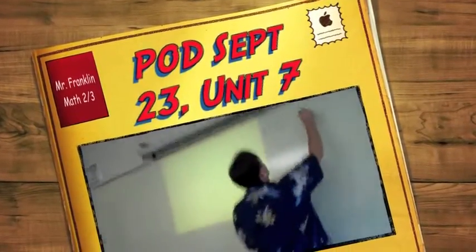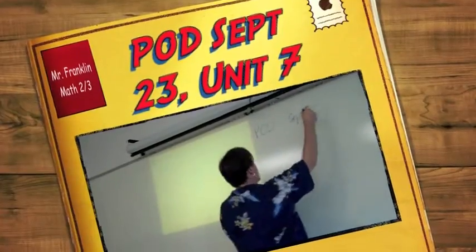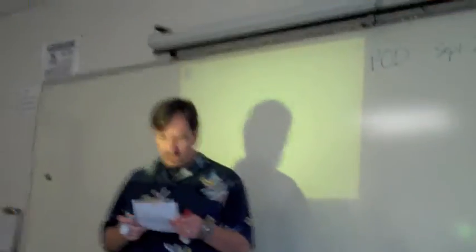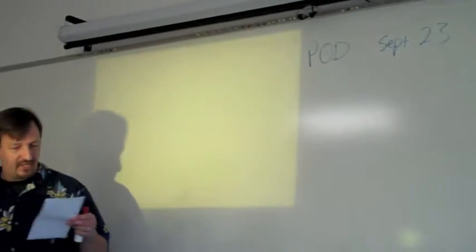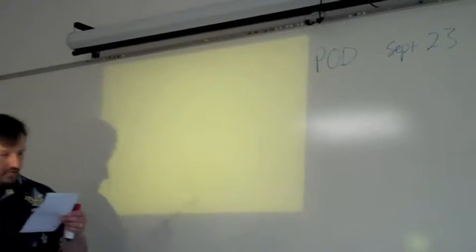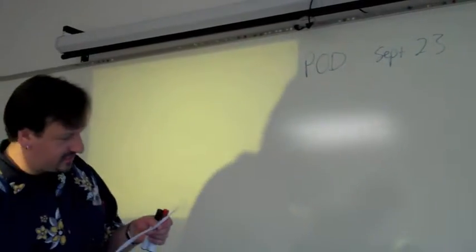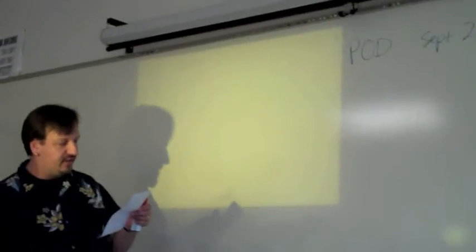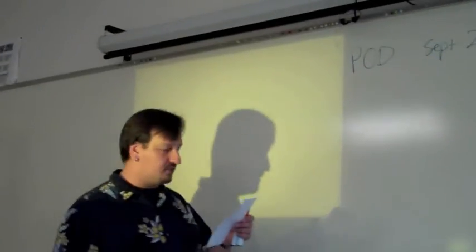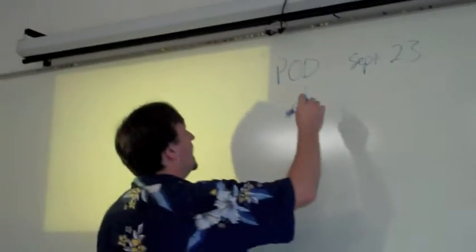This is the problem of the day for September 23rd. They give us an equation. It says one formula used by highway safety engineers relates minimum stopping distance d in feet to vehicle speed s in miles per hour.